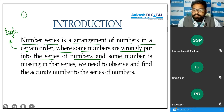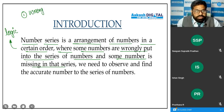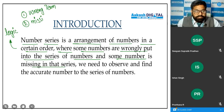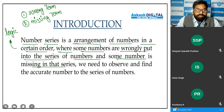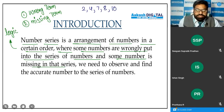The first type is the wrong term question, where we have to find the wrong term in the series. The second type is the missing term question, where a term is replaced by a question mark and we have to find it. For example: 2, 4, 7, 8, 10 — which term is wrong? Seven is the wrong term.